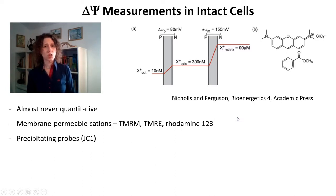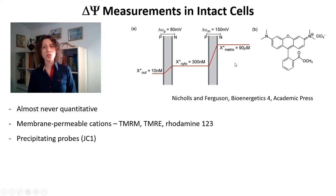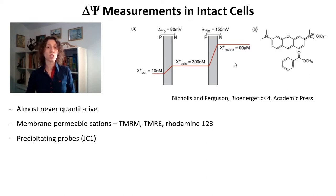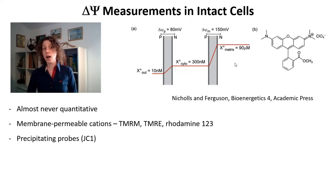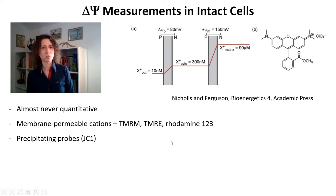There are also a few probes such as JC1, which not only accumulate but precipitate within the matrix and then change their fluorescence. So you're not only measuring accumulation of the probe by changes in fluorescence, but a change in the properties and spectra of this probe. These probes are even more complicated because the precipitation depends not only on concentration, but on size, shape, and other factors. So I do not really recommend these precipitating probes — there are even more artifacts with them than with the cationic fluorescent probes.